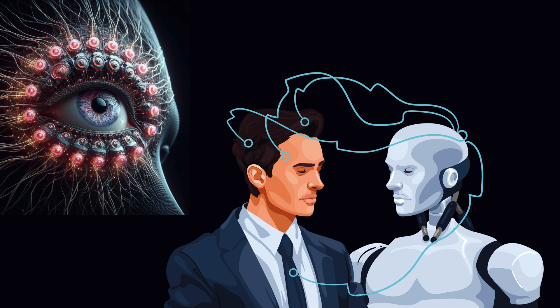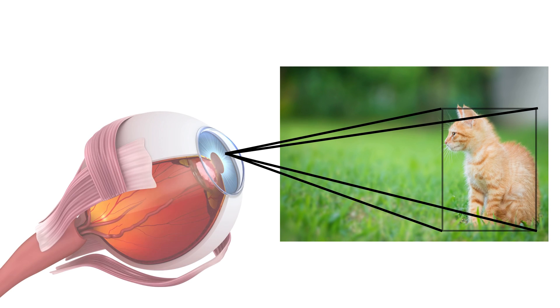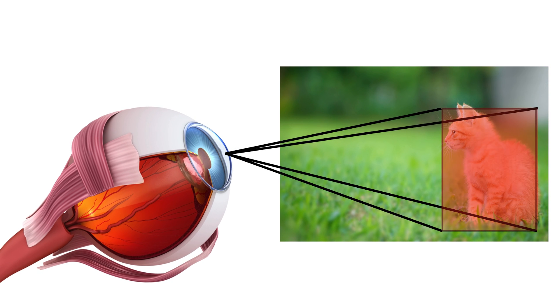Just like our own visual system, the attention mechanism in neural networks mimics the selective focus of the human brain. When you look at an image, your eyes don't process the entire scene at once — they zoom in on specific parts. In the realm of attention mechanisms, this selective focus translates into assigning higher importance, or weights, to relevant parts of the input data, akin to perceiving crucial details in high resolution. Conversely, less relevant areas receive lower weights, akin to processing them in low resolution.